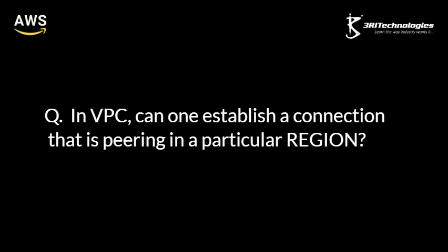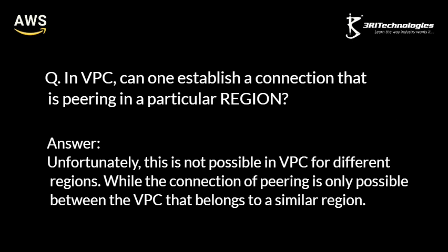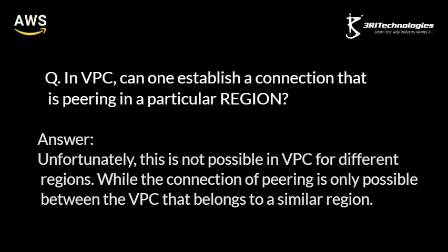In VPC, can one establish a peering connection in a particular region? Unfortunately, this is not possible in VPC for different regions. Peering connection is only possible between VPCs that belong to the same region.